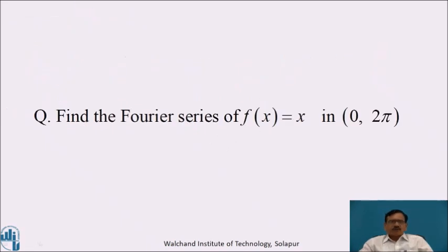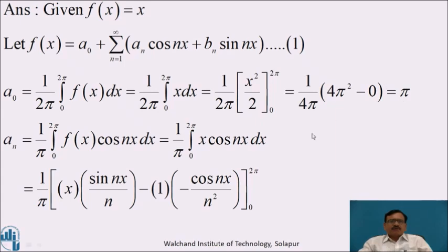Now find the Fourier series of f(x) = x in the interval 0 to 2π. Pause the video and complete the Fourier series of the given function. Using the standard form with equation 1, we calculate a₀ = (1/2π) ∫₀^(2π) x dx = (1/2π) · [x²/2] from 0 to 2π. Putting in the limits gives a₀ = π.